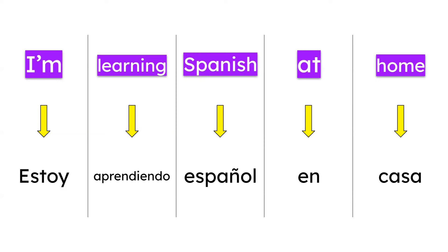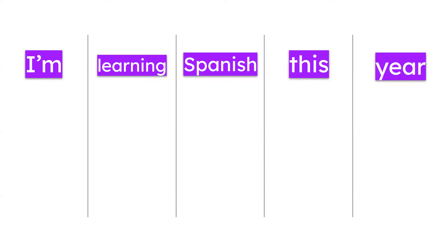But what about this sentence: 'I am learning Spanish this year'? You might think, okay, since I already use estoy aprendiendo español, I need to use the same structure here — but not so fast. Because here we need the future tense.